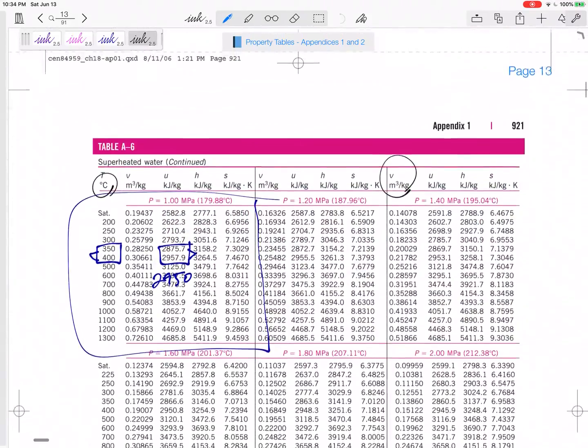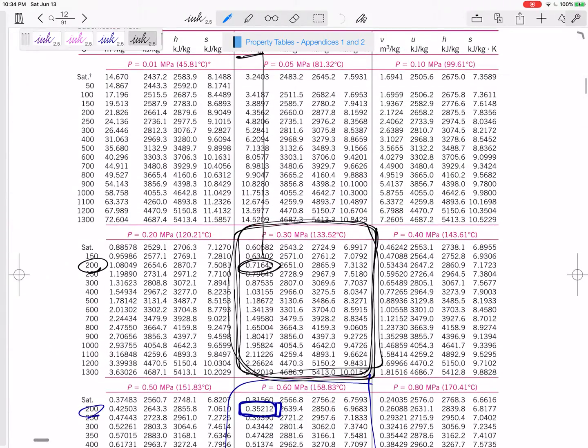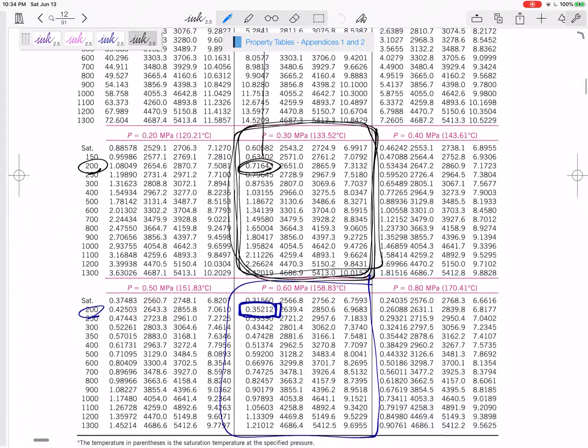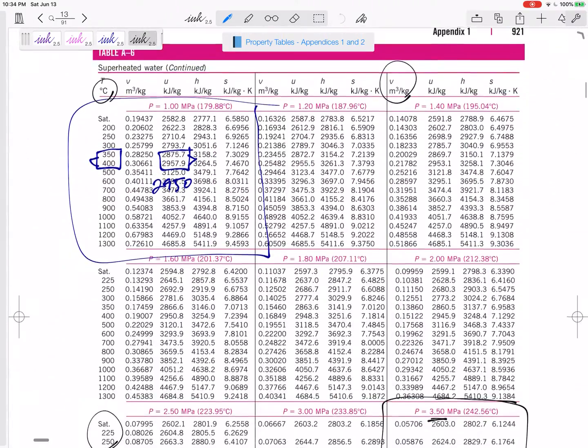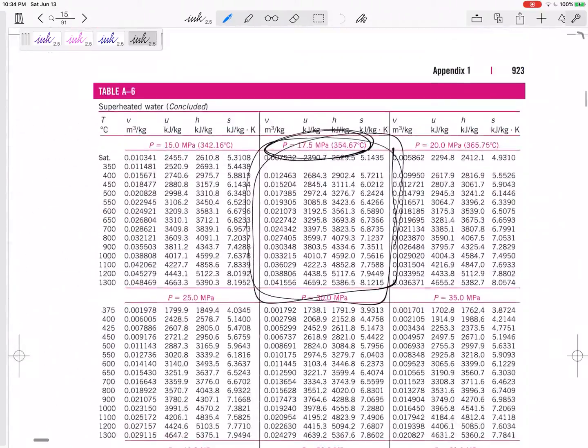It's compressed and actually if I didn't already know it was liquid water, I would go to the saturated table and it would tell me that temperature is too low at 15 MPa or that pressure is too high at 100 degrees C. So it would send me to table A-7.